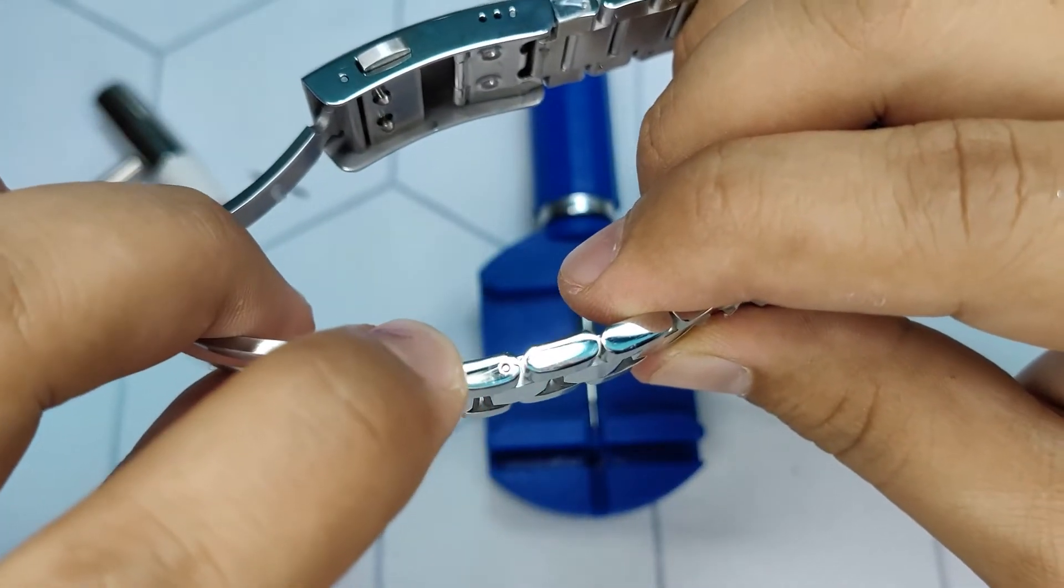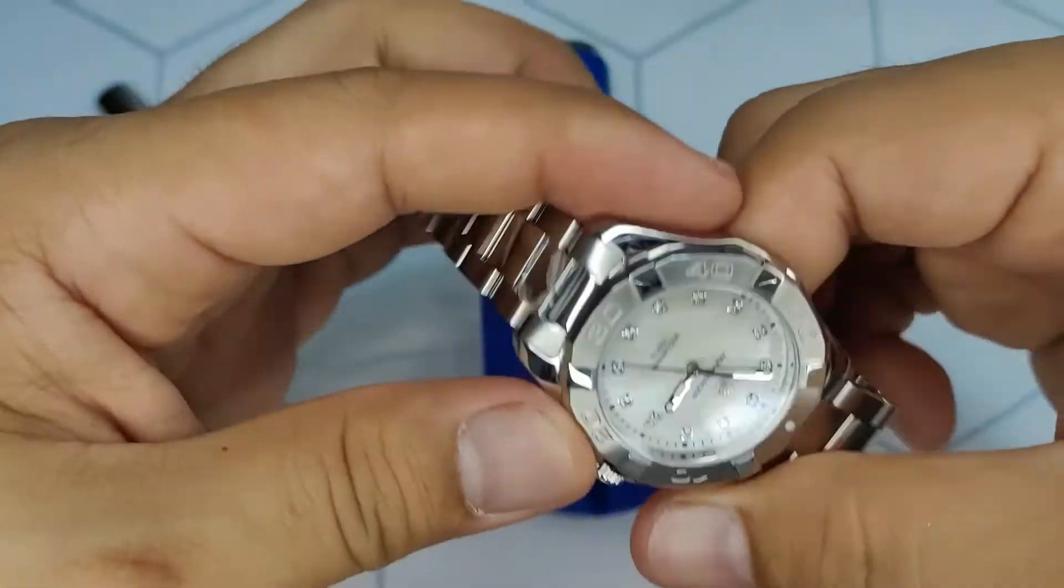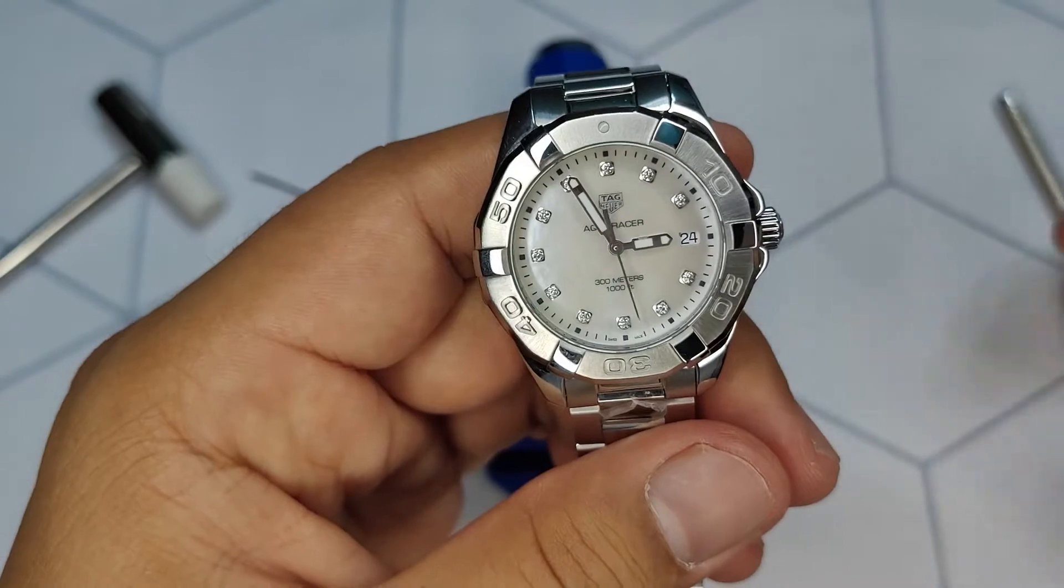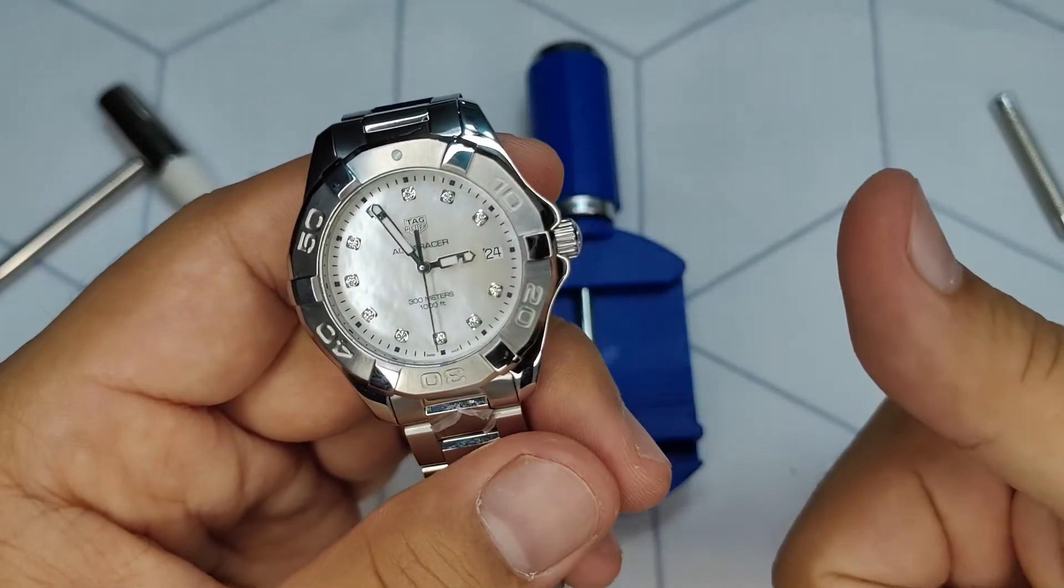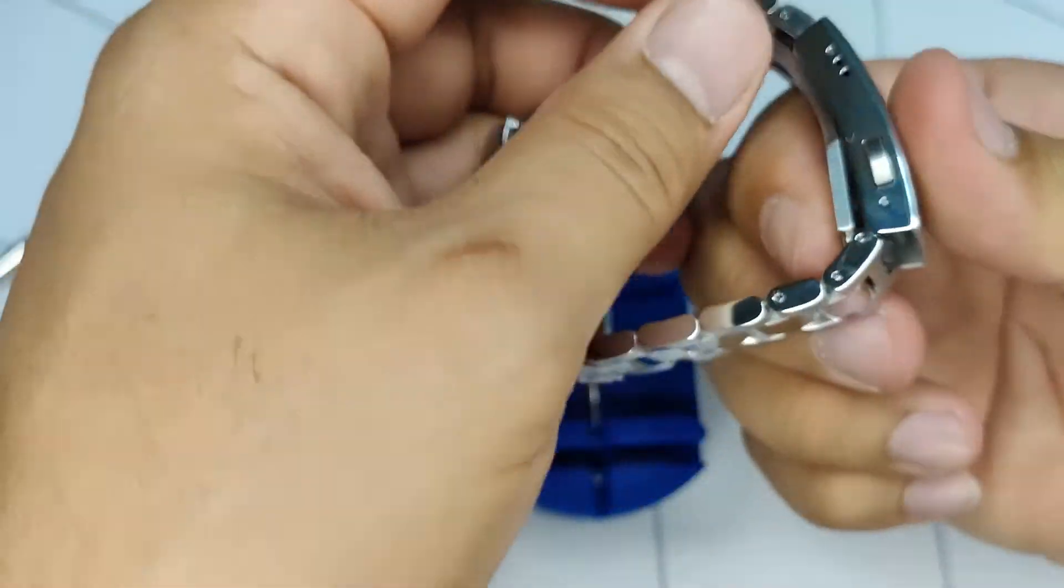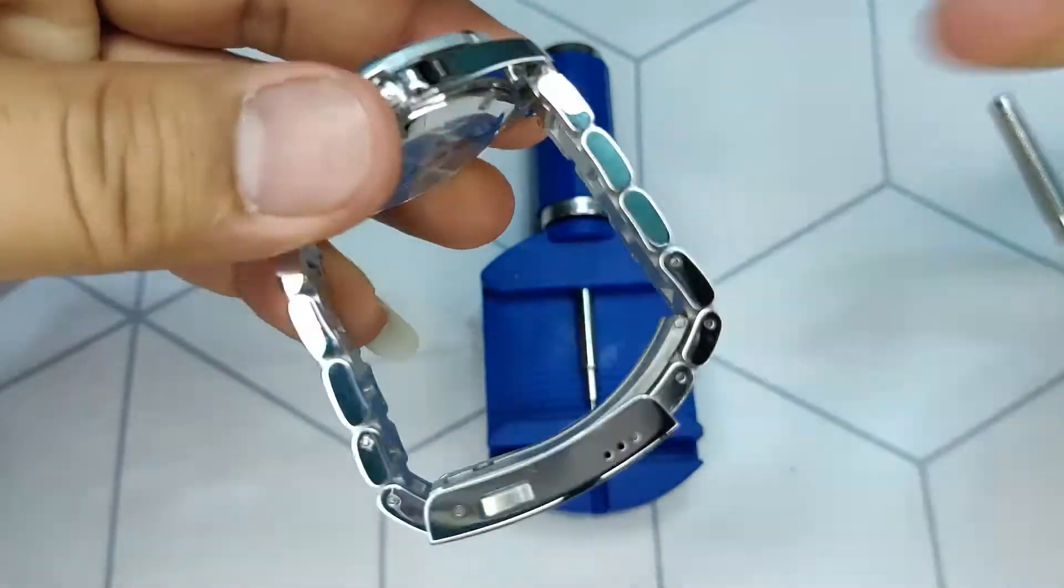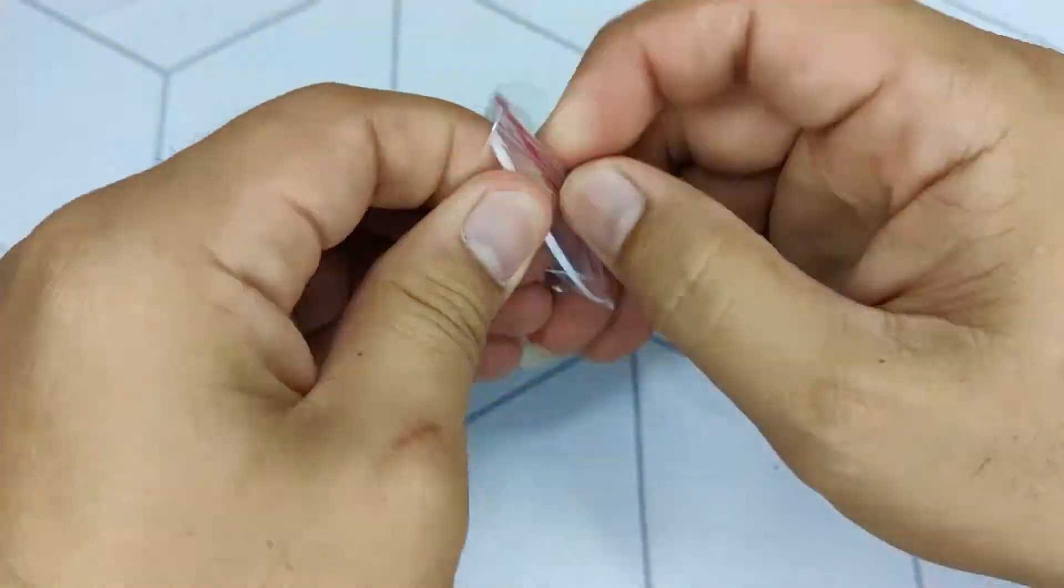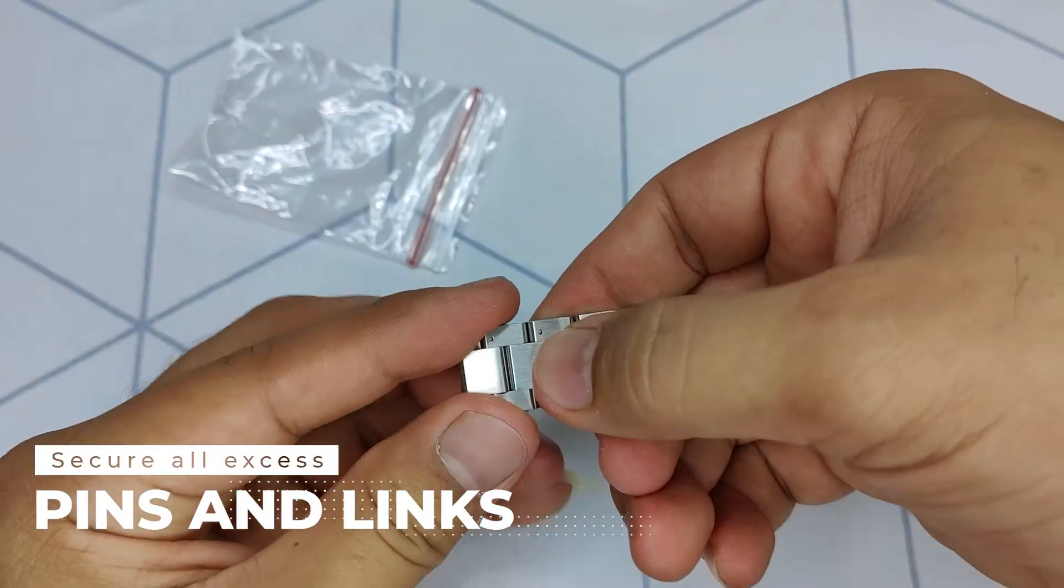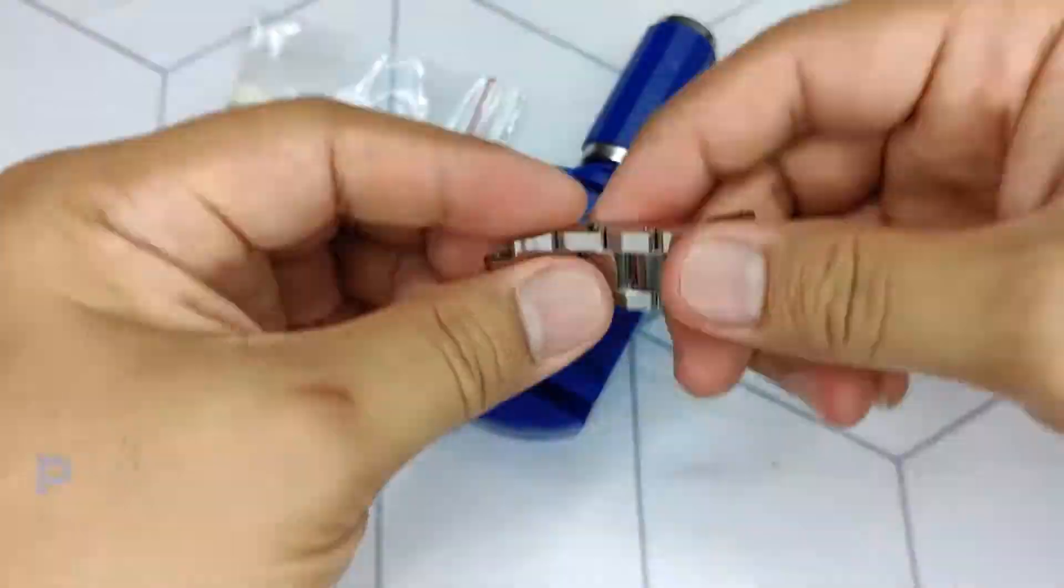I accidentally made some scratches on the watch. To avoid this on your side, I recommend placing some duct tape on the sides and make sure your tools don't have sharp edges. Now the link adjustment is complete. Secure all excess pins and links. Save it inside the watch box. This may come handy in the future.